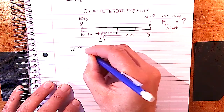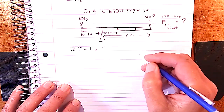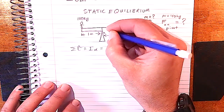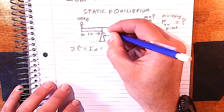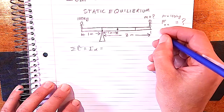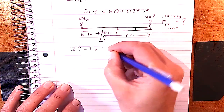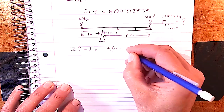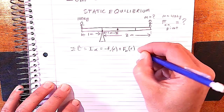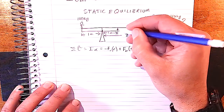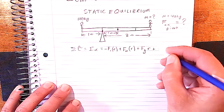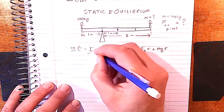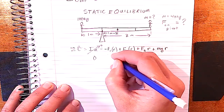Since the net torque is zero, we can treat this as a torque problem. We set up I·alpha equals the sum of torques and choose a pivot point. Choosing the pivot as our origin makes the normal force at the pivot contribute zero torque, leaving only one unknown. The torques are: minus F1 (the first kid's weight) times its radius, plus the beam's weight at the center of mass times its radius, plus the unknown kid's weight times their radius.